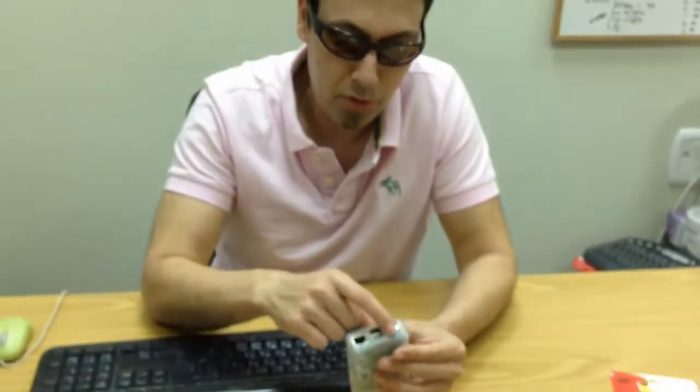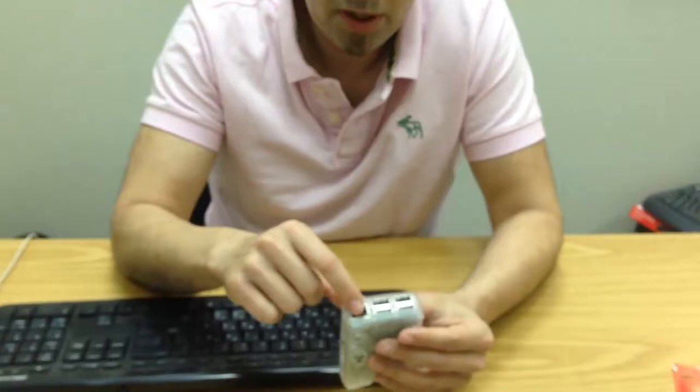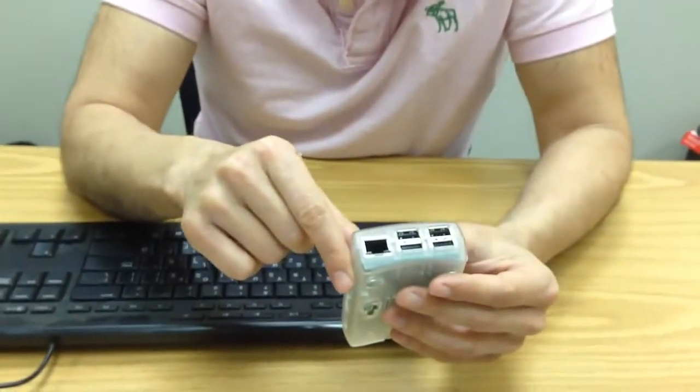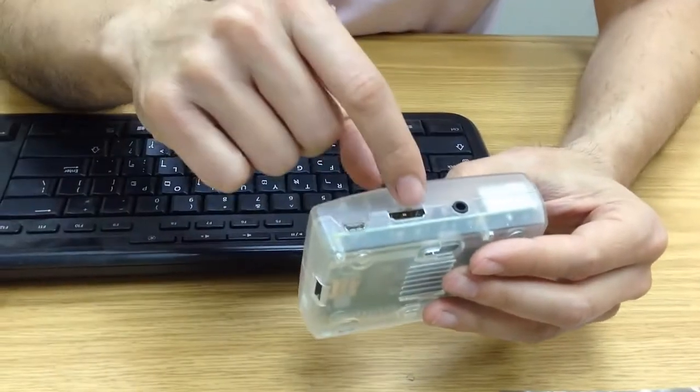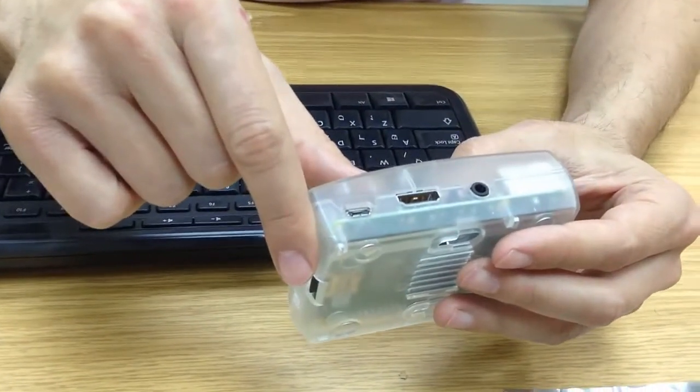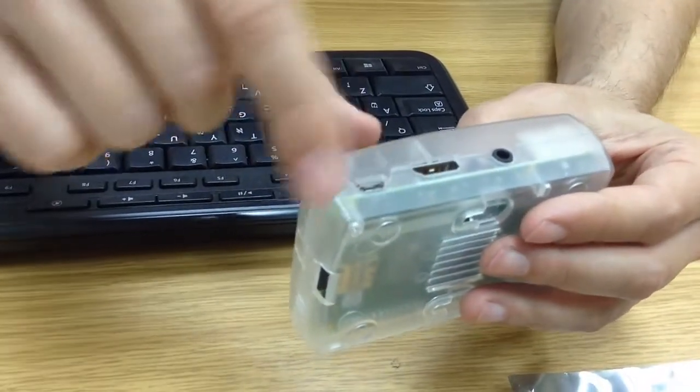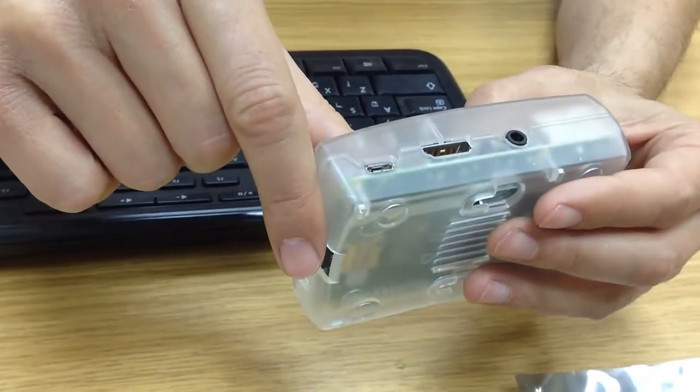So we have four USB ports. We have one LAN RJ45 port. We have the audio line. We have the HDMI port and we have this one. This one is the OTG. We use it for power. Let's see how it works.